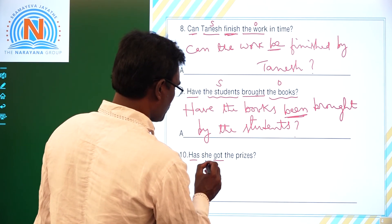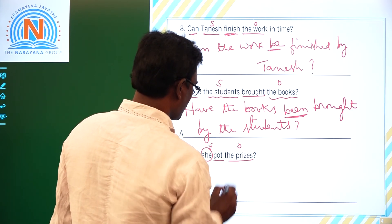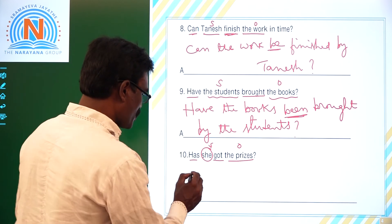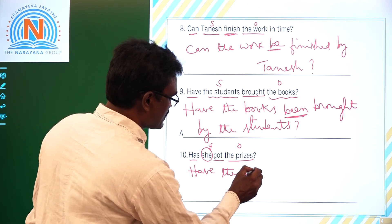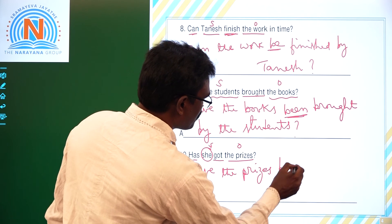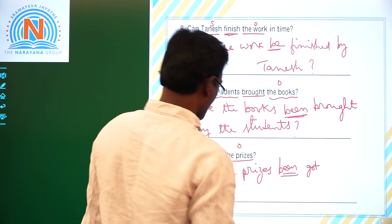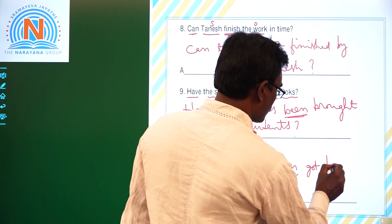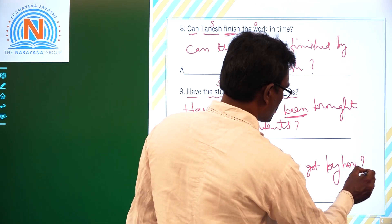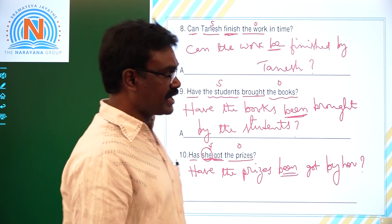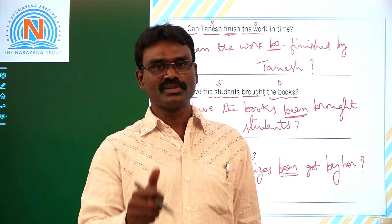Last one: 'Has she got the prizes?' 'Has' is the helping verb, 'got' is the main verb, 'she' is the subject, and 'the prizes' is the object. 'The prizes' is plural, so we begin with 'have.' V3 of 'get' is 'got.' 'She' becomes 'her.' Answer: 'Have the prizes been got by her?' I hope you got this. Thank you, all the best.